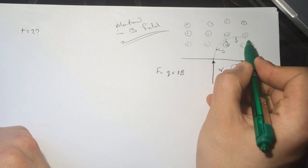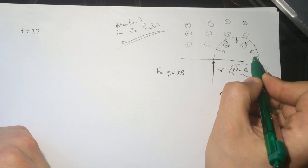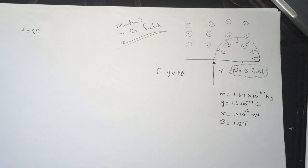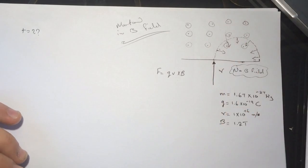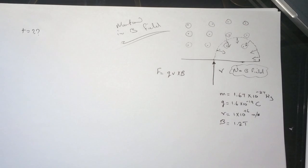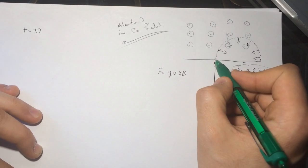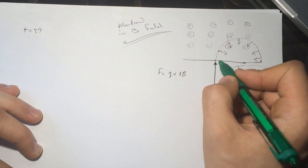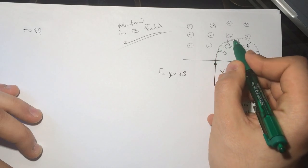Alright, so they're asking about what is the time required for the proton to reemerge into the field-free region. So they want the time for the proton to get from here to here and go back.